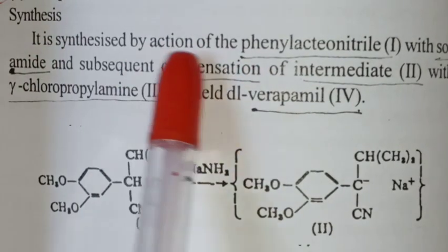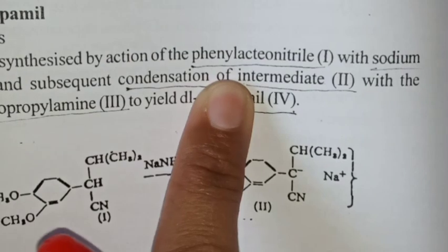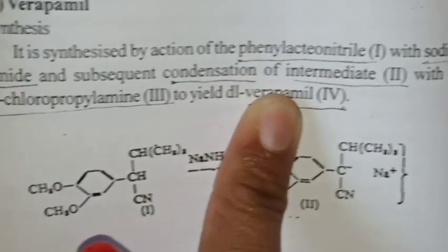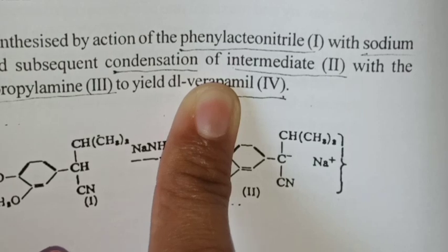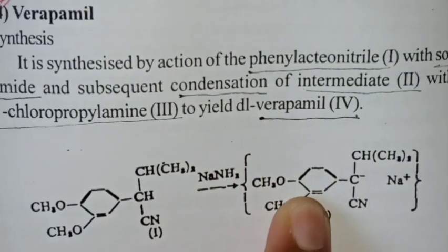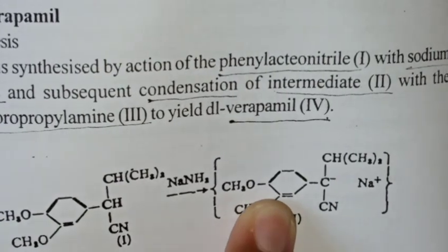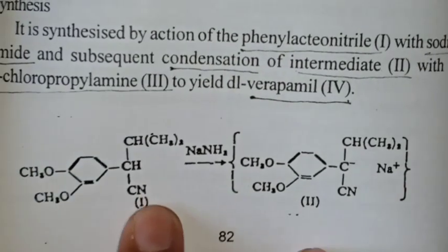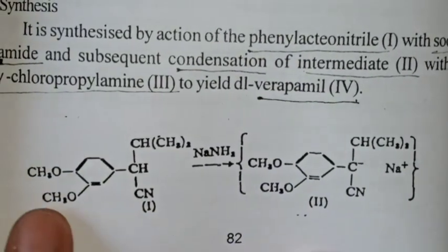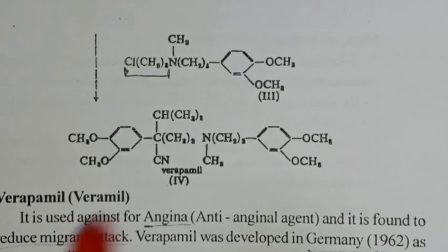Regarding synthesis, verapamil is synthesized by the action of phenyl acetonitrile with sodium amide, followed by condensation of the intermediate with gamma-chloropropyl acid, yielding a reaction with phenylamine to produce verapamil.